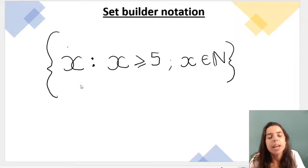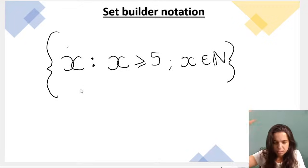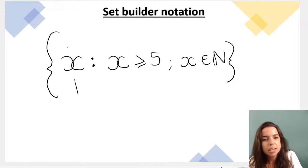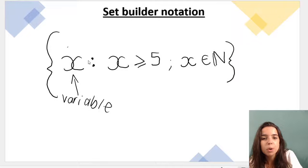They'll often use x but if they say otherwise it could be anything. Remember the variable is a placeholder. Then we always put these two dots over here, this little colon. And then you're going to explain exactly what set you're referring to.